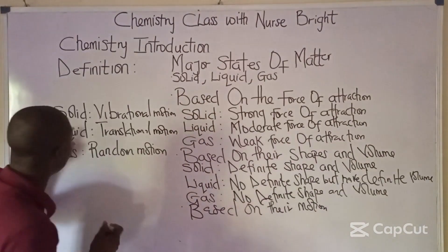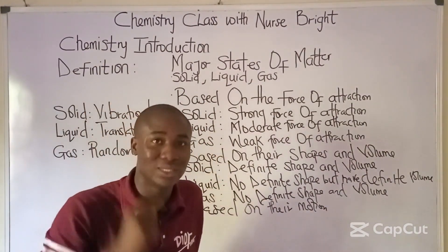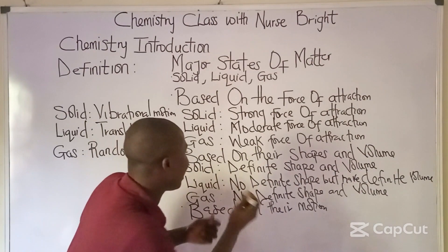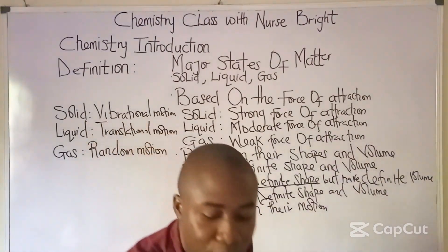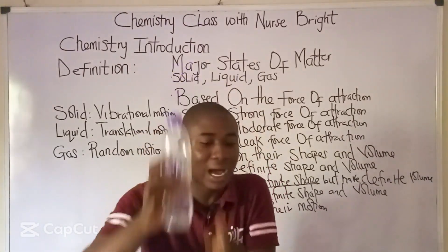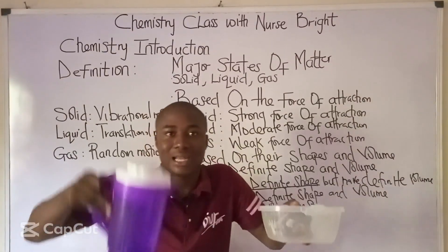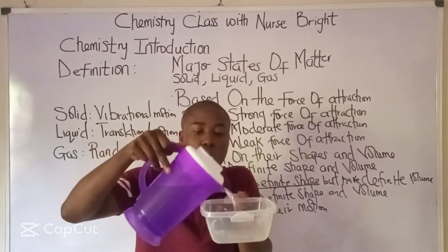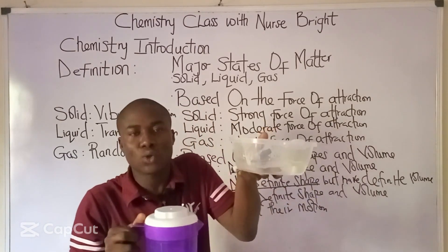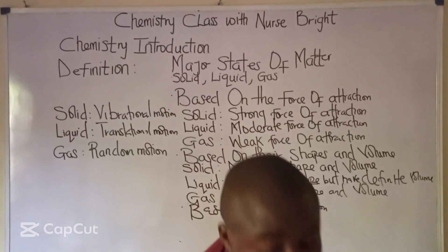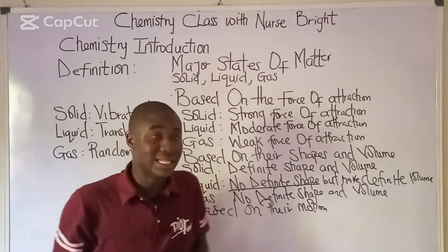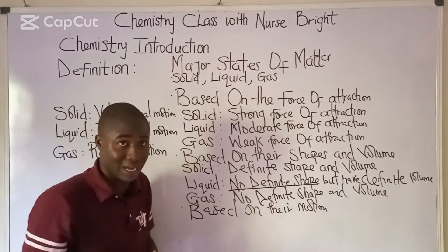It must also be noted that liquids take the shape of their container, which is why they don't have a definite shape. You can see this water inside the cylindrical container taking the shape of the container. When poured into another container, the water takes the shape of that new container. Liquids only take the shape of whatever container they are placed in — they have no fixed shape.